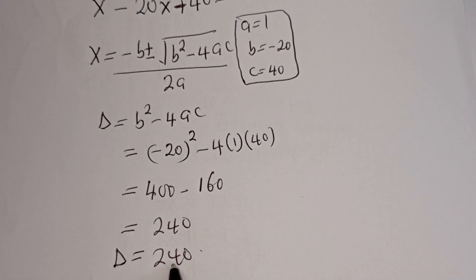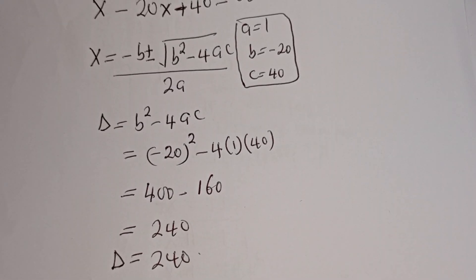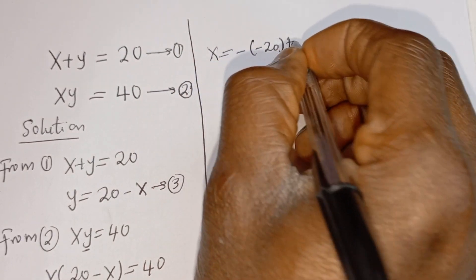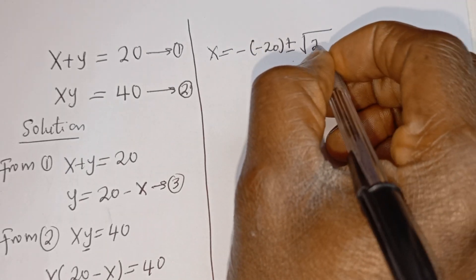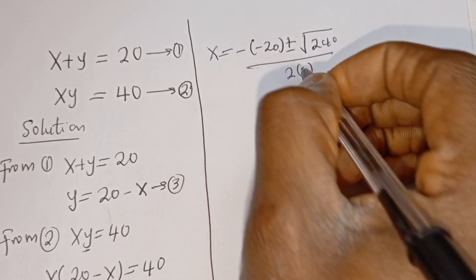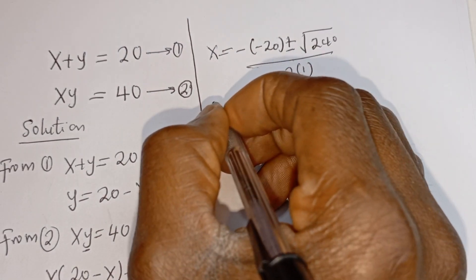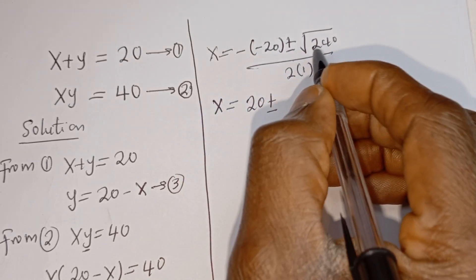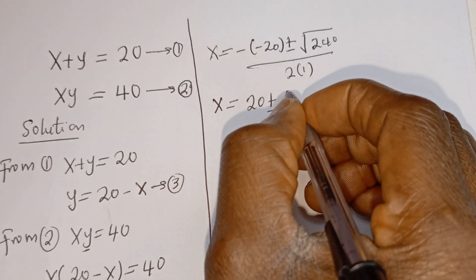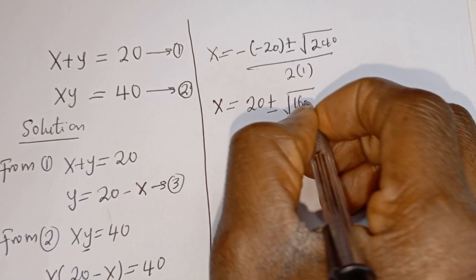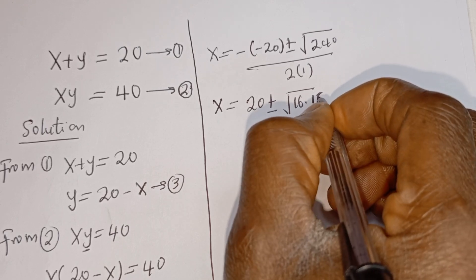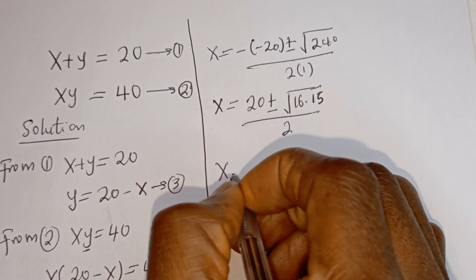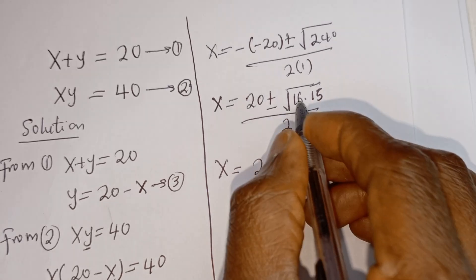Now let's plug this back into the formula. x is equal to minus bracket minus 20, plus or minus square root of 240, over 2 multiplied by 1. Then x is equal to minus times minus 20, which is 20, plus or minus. The square root of 240 can be written as square root of 16 multiplied by 15. Everything over 2 times 1.